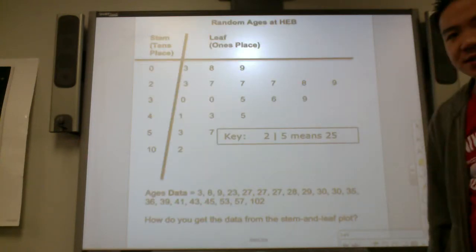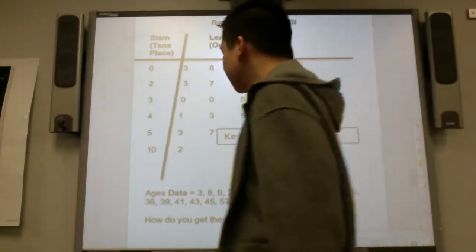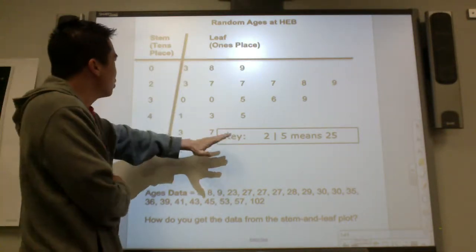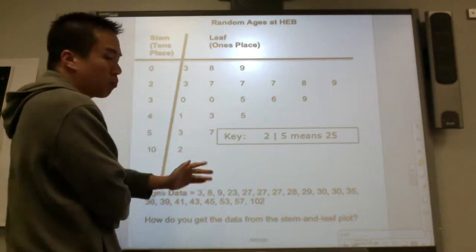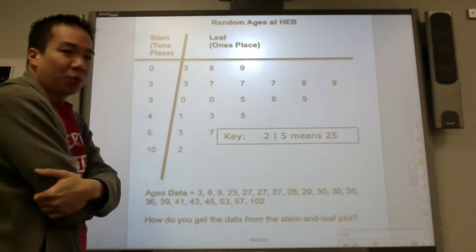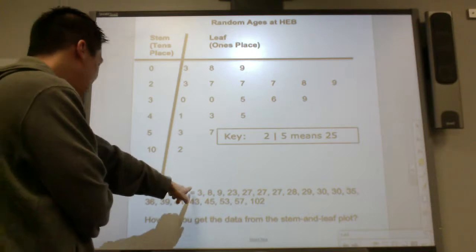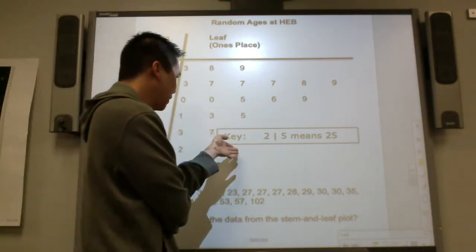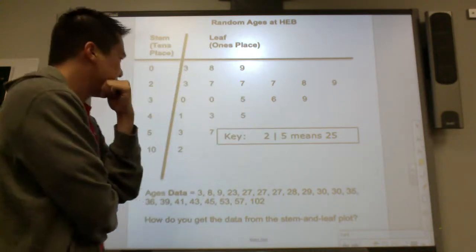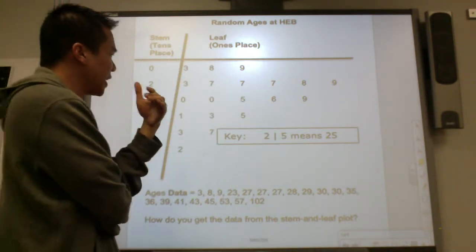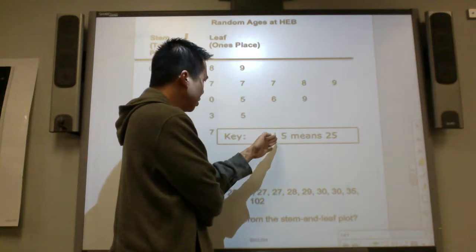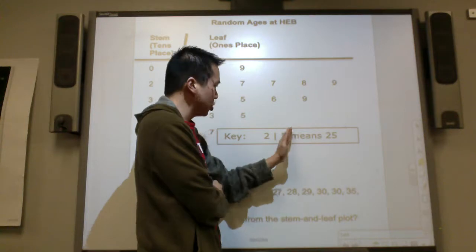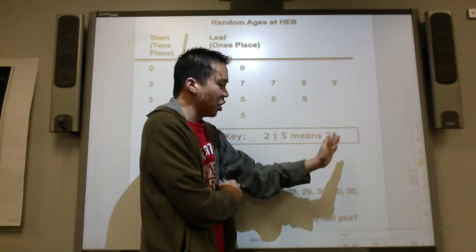So what is a stem and leaf plot? It seems like the stem is on the left and the leaf is on the right, with a partition — a line — that separates the two values. Looking at the key: two-dash-five means twenty-five. So they split up the two place values: the two is on the left and the five is on the right.